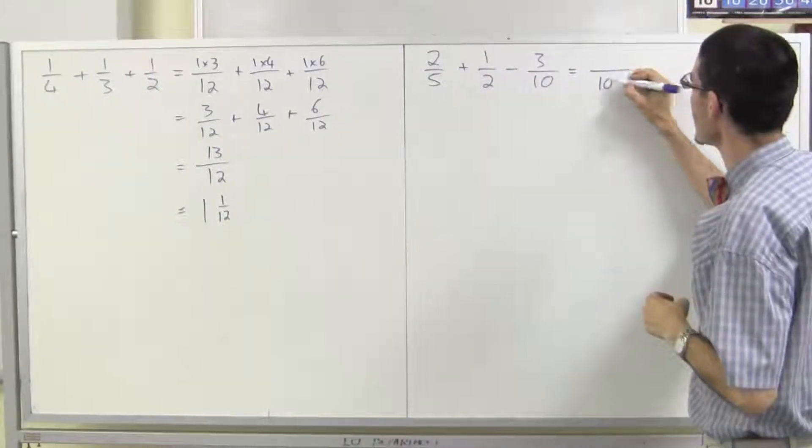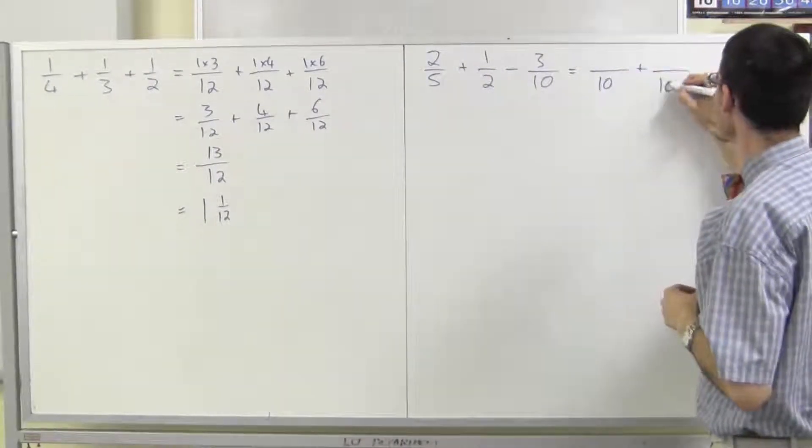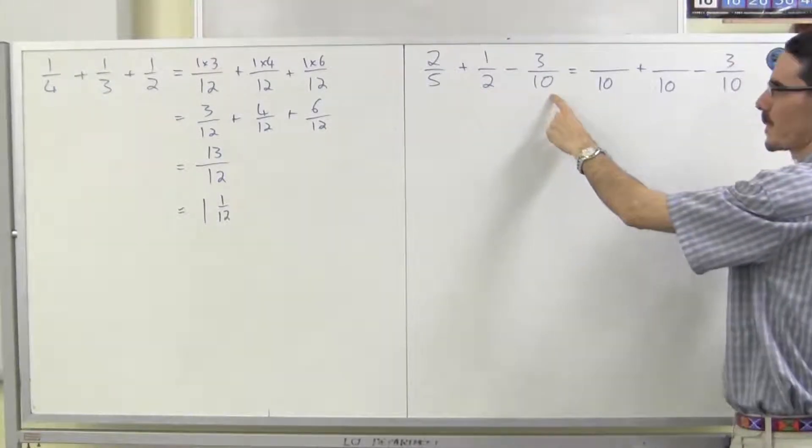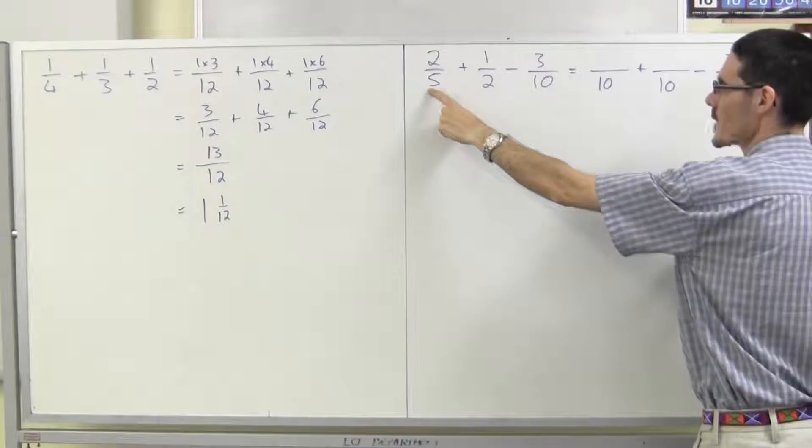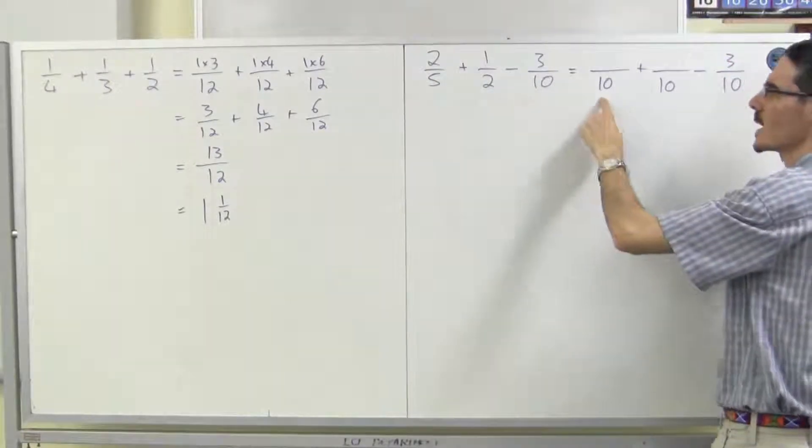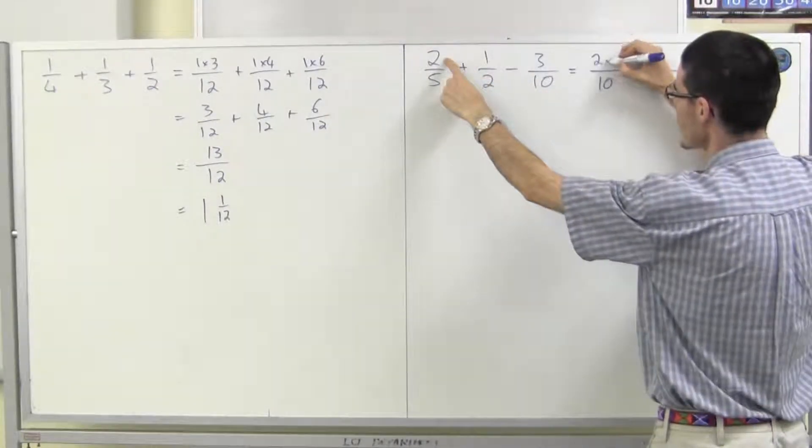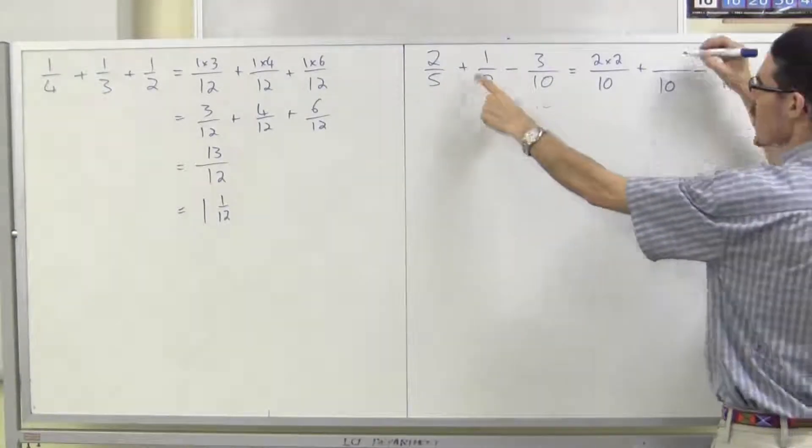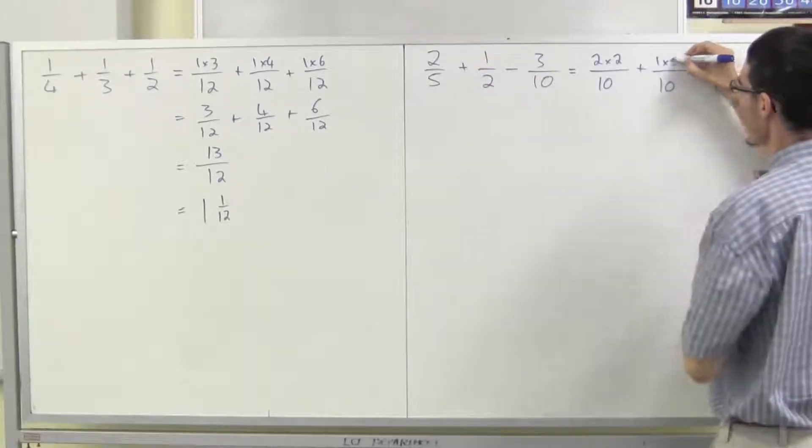So let's write them all as tenths. This one already was. 2 fifths, 5 times 2 is 10, so at the top I'm going to have 2 times 2. 2 times 5 is 10, so at the top I'm going to have 1 times 5.